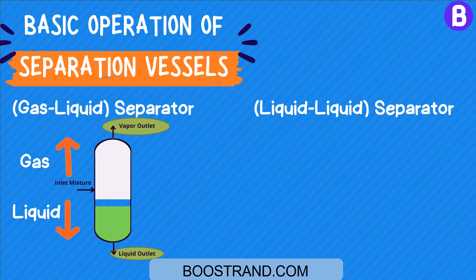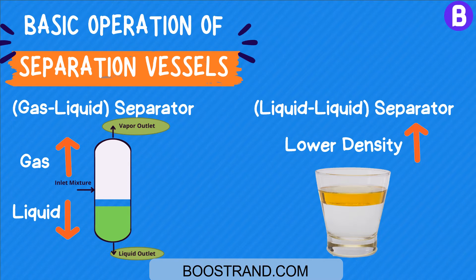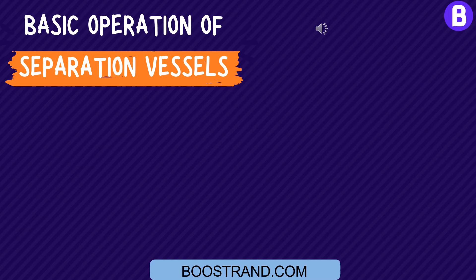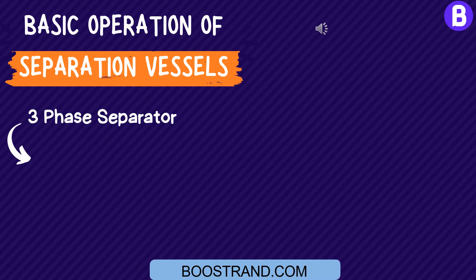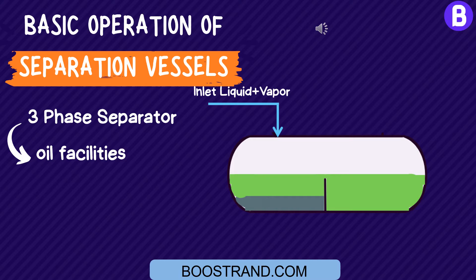For liquid-liquid separators, we have a liquid that has less density than the other. For example, oil is lighter than water, so the liquid with more density will settle to the bottom and we will have two liquid layers. We may even have three-phase separation in one vessel; the most famous application is in oil facilities, where the crude oil from the wells is accompanied with associated gas and formation water.